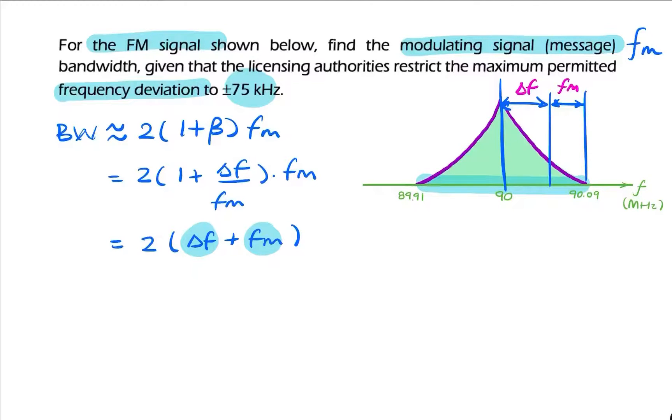In this case, we can find the bandwidth by simply subtracting these two frequencies. We can say the bandwidth, because it's a bandpass signal, is simply the higher of the two frequencies minus the lower of the two frequencies. So that's 0.18 megahertz, or 180 kilohertz.